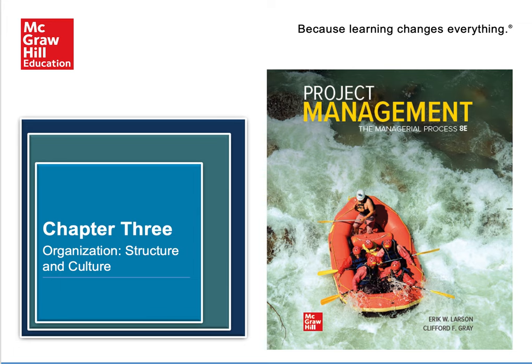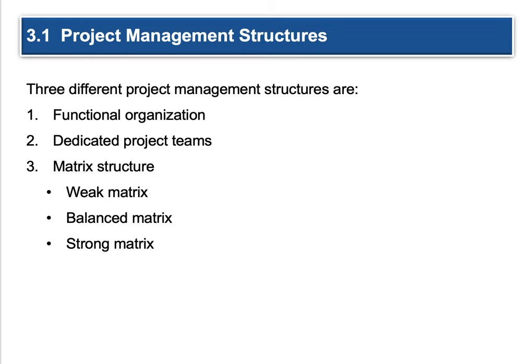Chapter three: looking at the organization structure and culture. When examining project management structures, there are really three that we need to look at. The first one is the functional organization. The second one is dedicated project teams, which is kind of what's reflected in this course. And then you also have to consider matrix structures. Within matrix structures there are three options: a weak matrix, a balanced matrix, and a strong matrix. In the reading and this presentation, we're going to take a long look at some organization charts and how they can be structured.